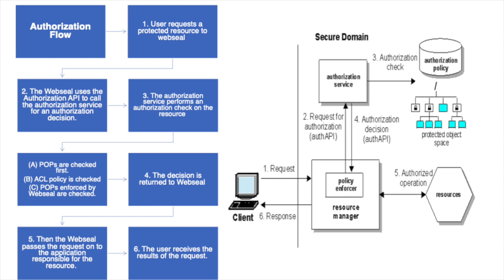In the authorization flow, first the user requests a protected resource from WebSEAL. Then the policy enforcer uses the API to call the authorization service for an authorization decision. The authorization service performs a check on the resource: the protected object policies (POPs) are checked first, next the access control list attached to the object is checked against the client's credentials, and finally POPs enforced by the resource manager are checked. The decision to accept or deny the request is then returned as a recommendation to the resource manager.